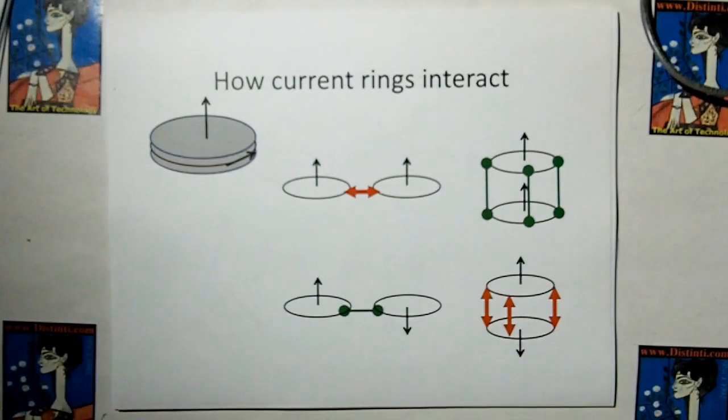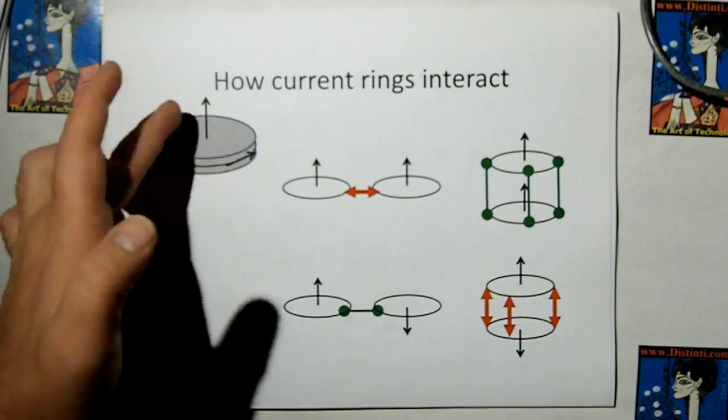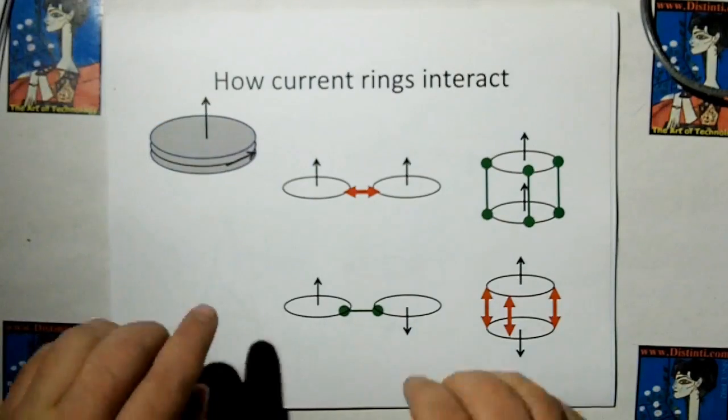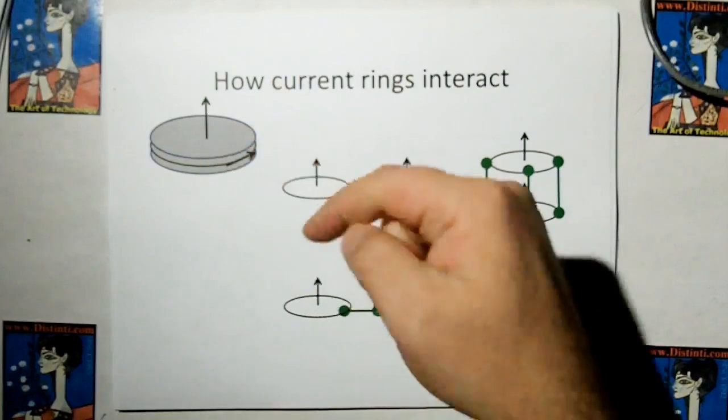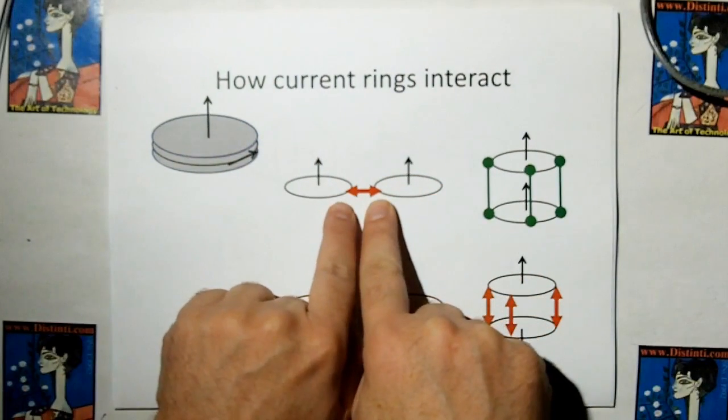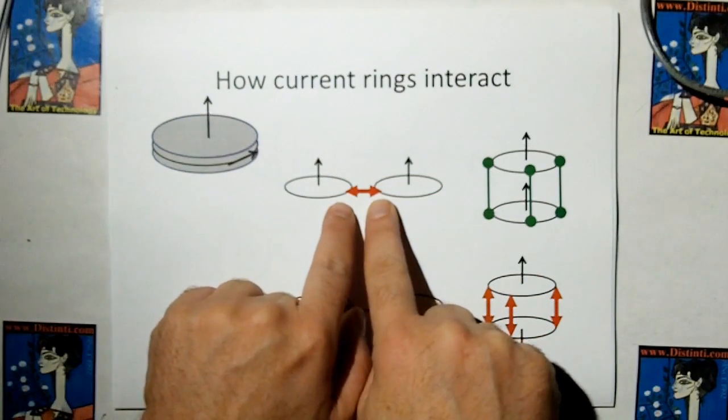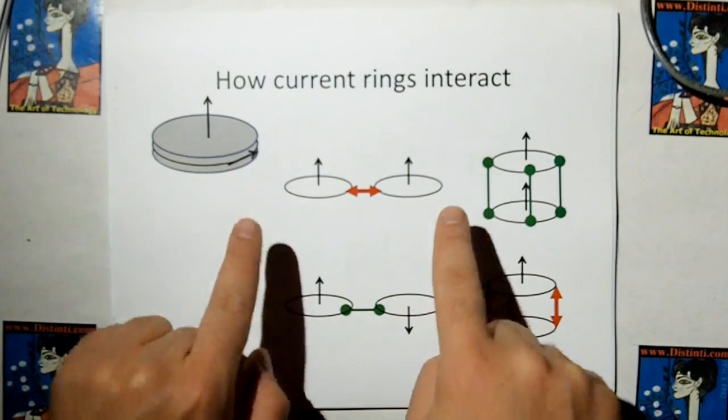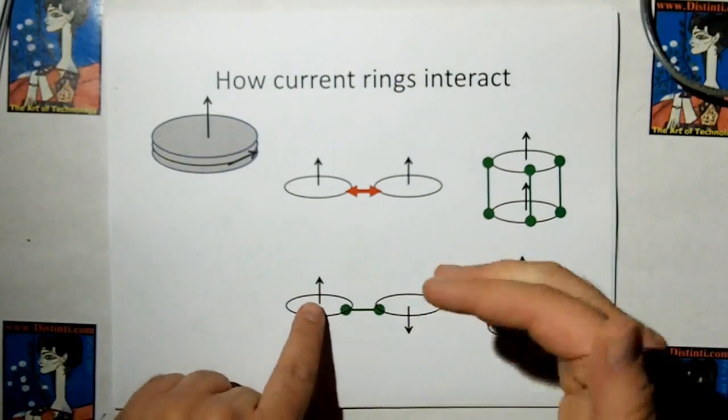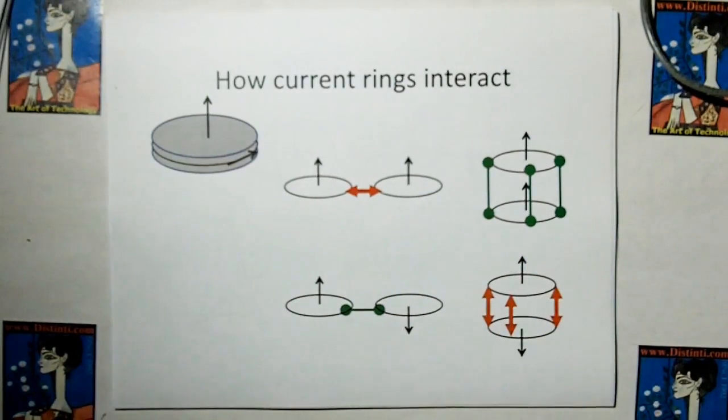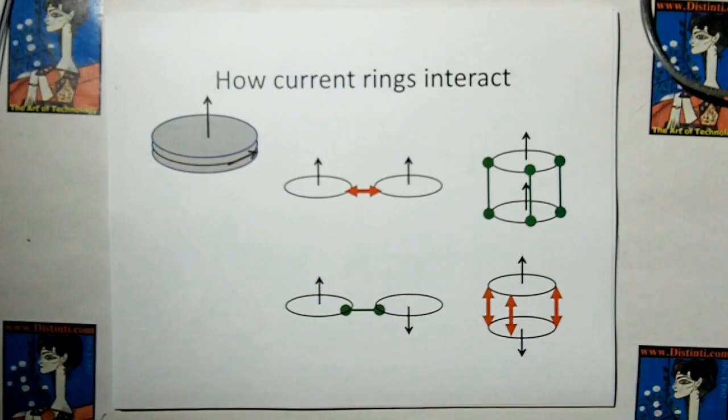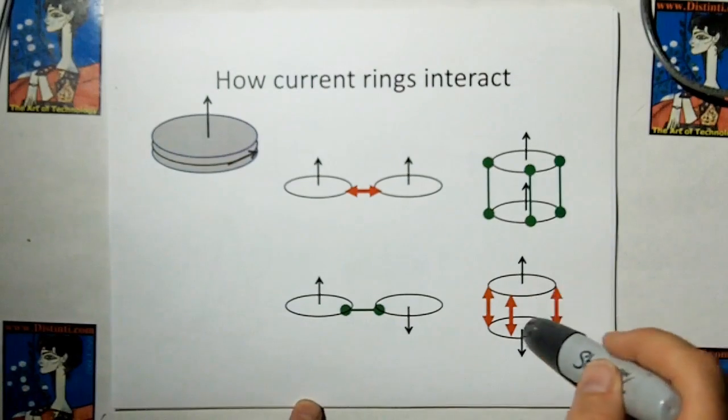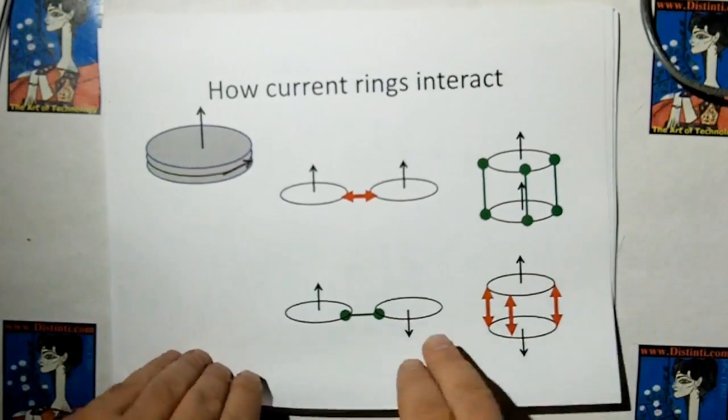Reviewing also from the previous video, a magnet, a disc magnet, is essentially a current ring. If you have two magnets with their current rings going in the same direction here, at this point the currents are going to be going opposite directions, so the magnets will repel. In this direction, because one magnet's upside down, the currents will be going in the same direction, so they're going to attract. You can go back to the other video to look at these. These basically are the same thing.